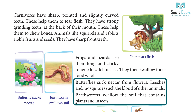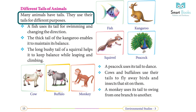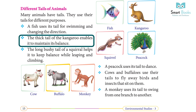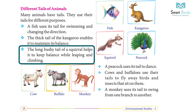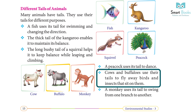Earthworms swallow soil that contains plants and insects. Many animals have tails and use them for different purposes. A fish uses its tail for swimming and changing direction. The thick tail of a kangaroo helps it maintain balance. The long bushy tail of a squirrel helps it keep balance while leaping and climbing. A peacock uses its tail to dance.